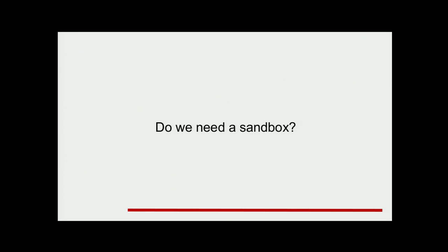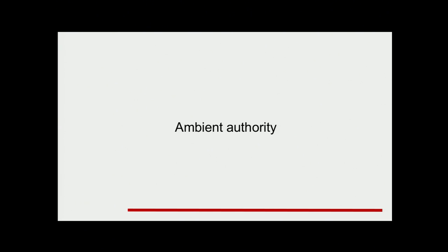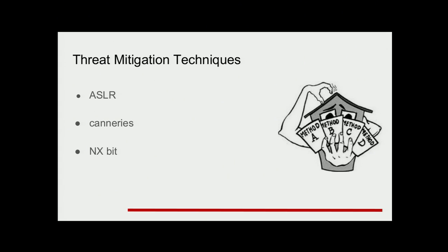Do we need a sandbox? Let's think about some program, a very simple program like CAT. If we would find a buffer overflow or any other vulnerability in that program, an attacker would gain access to all our data. He can read our emails, see all our photos, even send those photos over the internet, start SSHD and log into our computer. Every time we talk about such unauthorized access, when a program has access to every other piece of data without any control, we are talking about ambient authority.